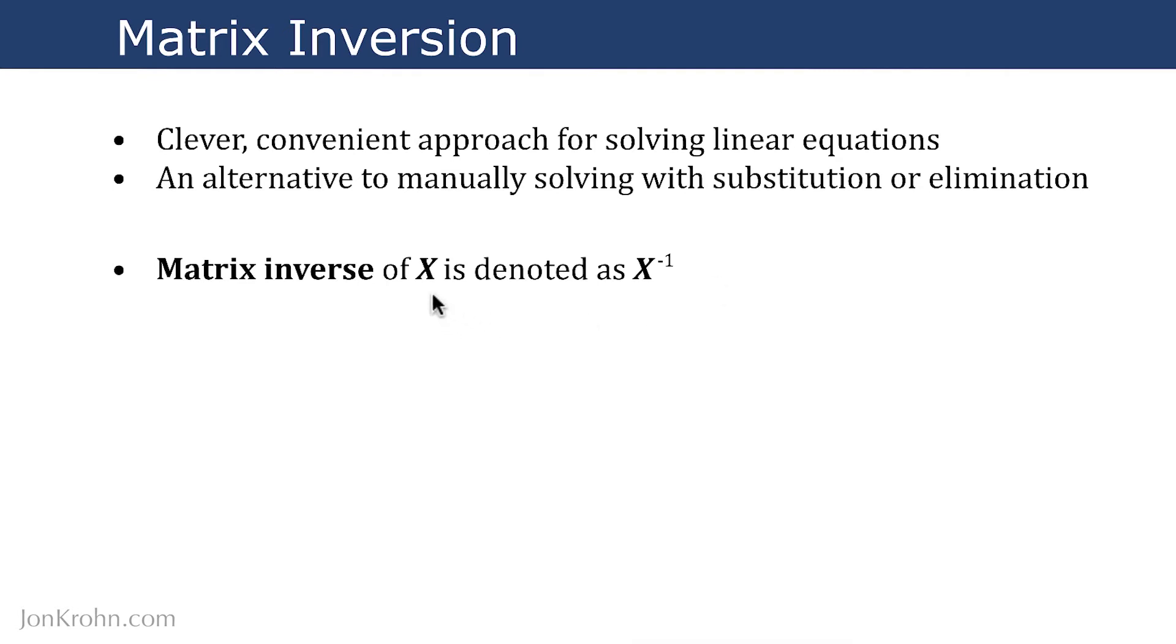The matrix inverse of some matrix x is denoted as x with a superscript of negative 1. This is similar to notation if you were to take any given variable and move it to the other side of the equation. This matrix inverse of x satisfies a specific property where if we take the matrix inverse and perform matrix multiplication with the original matrix x, the result is an identity matrix. So if the matrix x inverse has four rows and four columns, then we'll end up with an identity matrix I_4.